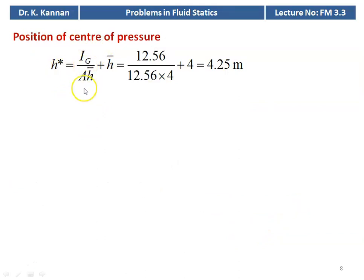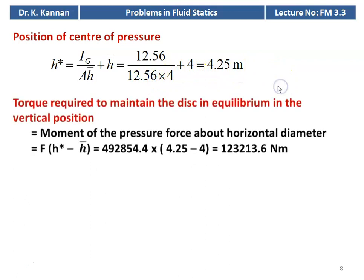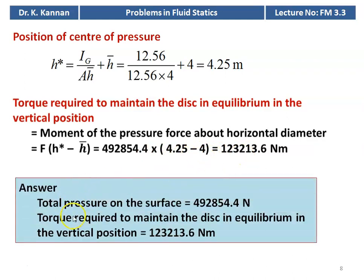Position of the center of pressure h* equal to I_g by A into h_bar plus h_bar equal to 12.56 divided by 12.56 into 4 plus 4 equal to 4.25 meter. The torque required to maintain the disc in equilibrium in the vertical position equals the moment of the pressure force about the horizontal diameter, which is F into (h* minus h_bar), which is 492,854.4 into (4.25 minus 4) equal to 1,23,213.6 Newton meter. The total pressure on the surface is 492,854.4 Newton and the torque required to maintain the disc in equilibrium equals 1,23,213.6 Newton meter.